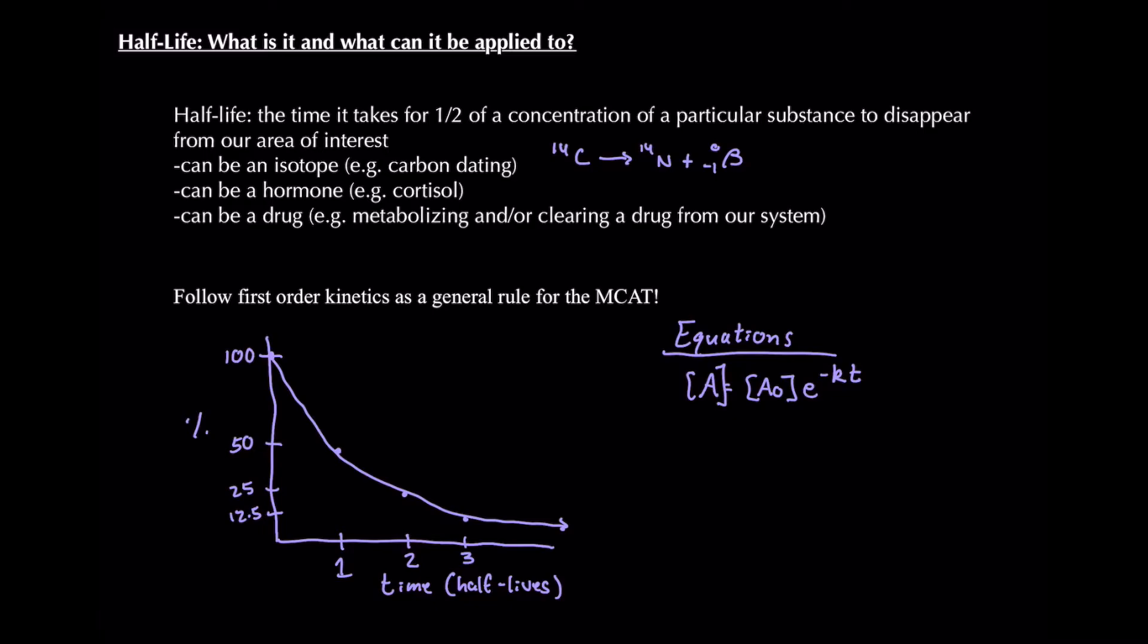And then to add to that, for first-order kinetics, we have e^(-kt). And oftentimes you'll see k written as lambda. Those are basically just our rate constants for a first-order reaction. And as a reminder, for a first-order reaction, our rate constant is going to have units of 1 over time. And that's usually 1 over seconds.